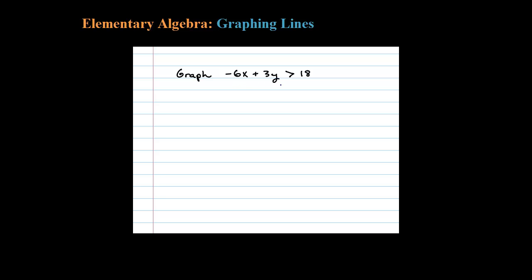Here we're asked to graph this linear inequality in two variables. Step number one is to graph the boundary, which is negative 6x plus 3y equals 18. The easiest way to do that is to find the x and y intercepts. The x-intercept occurs when y is 0, so when is negative 6x equal to 18? That's going to occur when x is equal to negative 3, so the x-intercept is negative 3 comma 0.